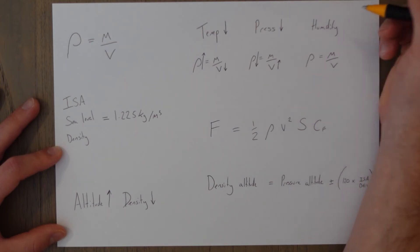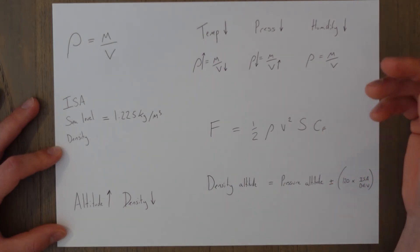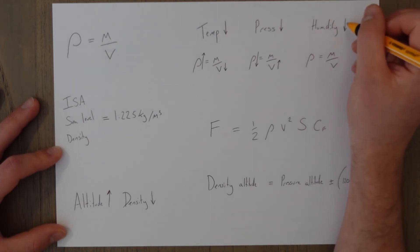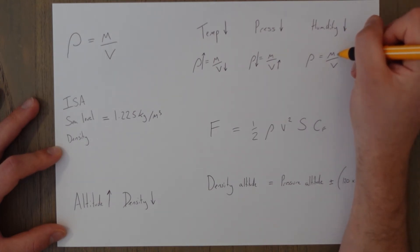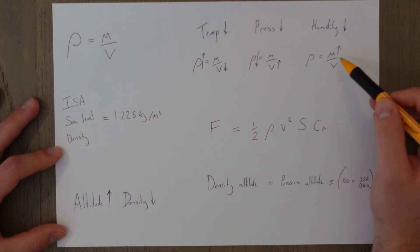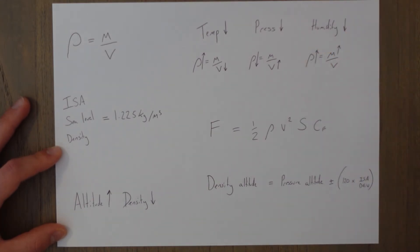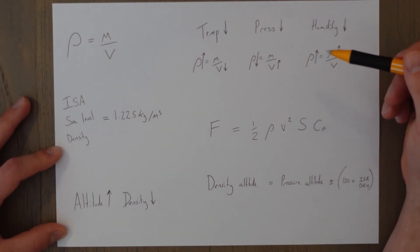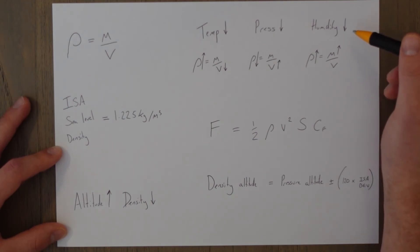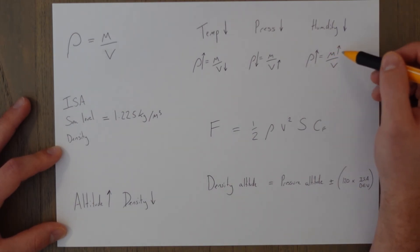As humidity decreases, it means there are fewer water molecules in the air. Water molecules are lighter than air molecules, so as there are fewer water molecules, the mass of the air actually increases. As the mass of the air increases, we're dividing a bigger number by the same volume, which means density also increases. So really humid air tends to be low in density, while really dry air is denser, essentially.